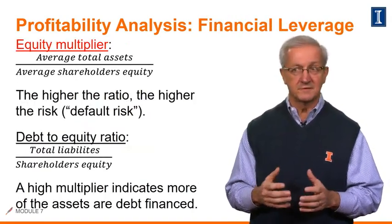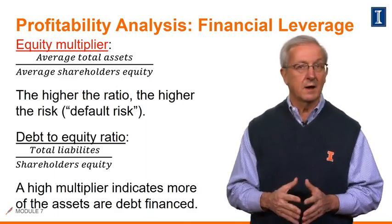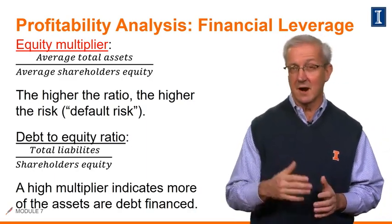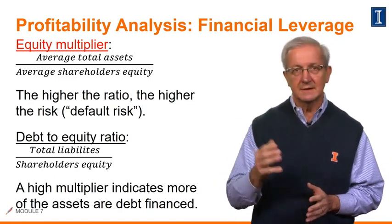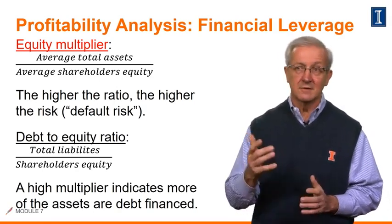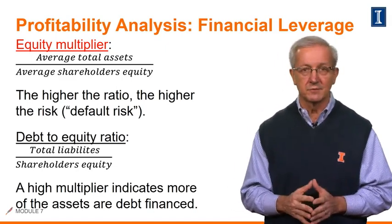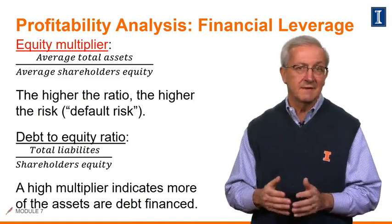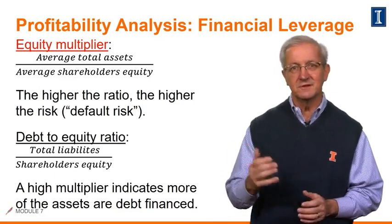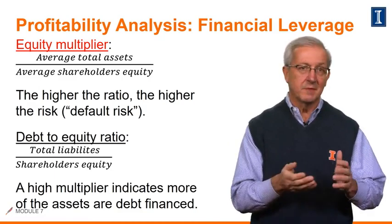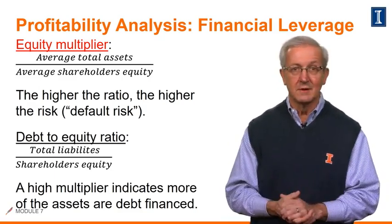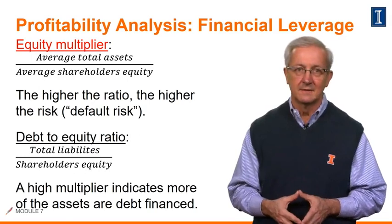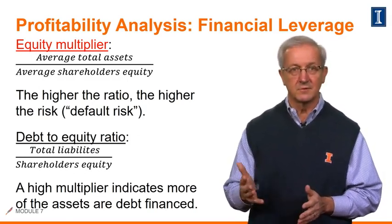Now in this slide, we discuss ratios that measure financial leverage. First is the equity multiplier. A high multiplier indicates that relatively more of the company's assets have been financed with debt — in other words, the higher the ratio, the higher the default risk. It's highlighted in red as we'll use this ratio later in the module. The calculation is average total assets divided by average shareholders' equity. Next, we talk about the debt-to-equity ratio, which provides a measure of credit protection in the event of insolvency. As with the equity multiplier, the higher this ratio, the higher our risk. For example, a ratio of 0.5 would indicate the company is financed by equity twice as much as by debt. The calculation is total liabilities divided by total shareholders' equity.